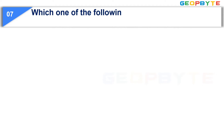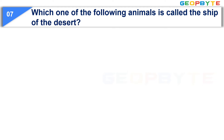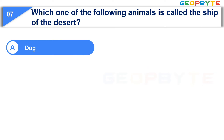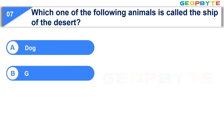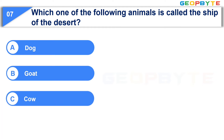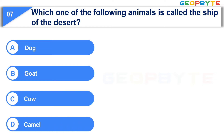Which one of the following animals is called the ship of the desert? Option A: Dog. Option B: Goat. Option C: Cow. Option D: Camel. Your time starts now.